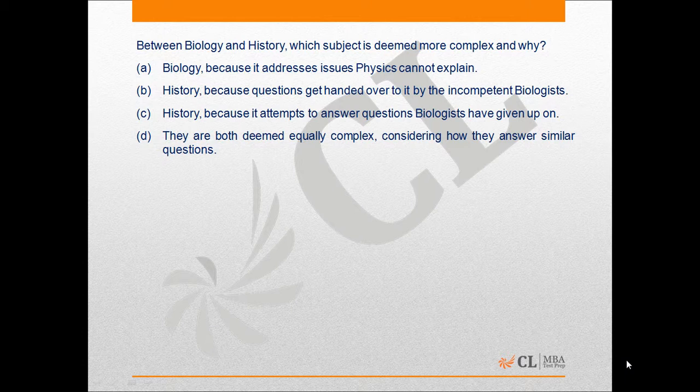The author says that physicists, when things get more complex, they pass it on to chemists, and chemistry, when things get more complex, pass it on to biology, and when biology pass it on to history and history to sociologists. Which means that history will be more complex than biology because it attempts to answer questions that biologists have given up on, and hence the correct answer to this question will be option C.